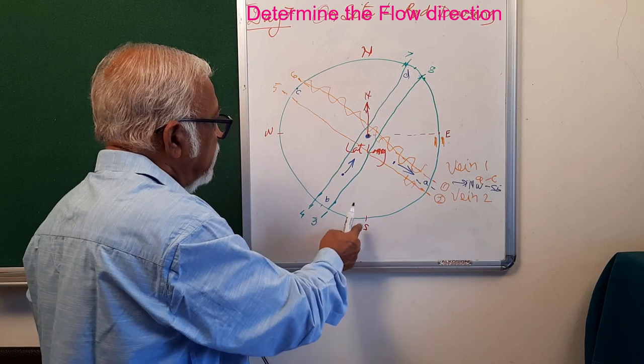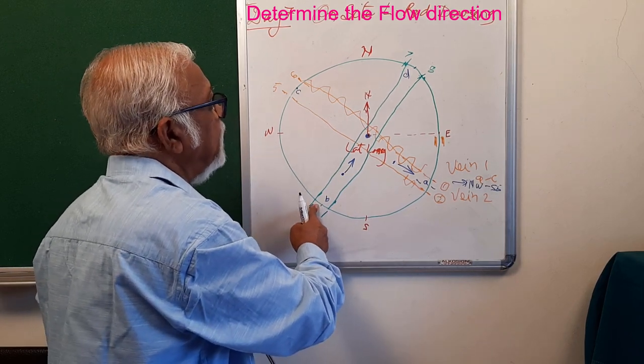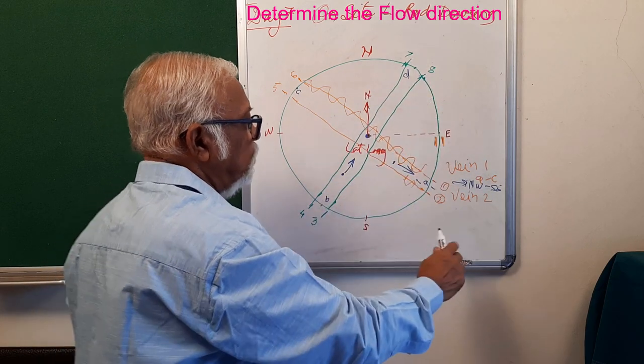So it is flowing from the Southwest side to the Northeast side. So when vein number two is flowing from Southwest to Northeast, so I have two flow directions.